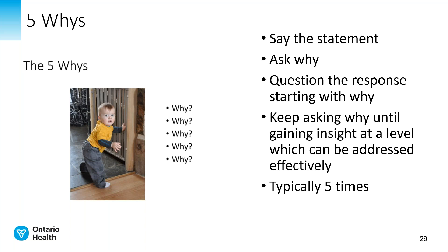Let's try it. Why is communication a problem? Because no one shares information. Why does no one share information? Because they don't know what to share. Why don't they know what to share? Because role clarity is a problem. Why is role clarity a problem? Because it has not been defined. Why has it not been defined? Because it is not clear who does what in this area and there's duplication in what people do. Now we have gone from a big bucket of lack of communication to knowing that people don't communicate because they don't know what each other do and there's duplication happening. That suggests a very different QI project versus trying to address the big bucket called communication.